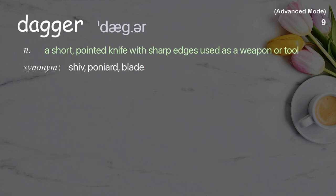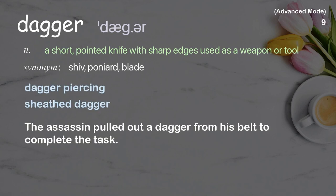Dagger: A short, pointed knife with sharp edges used as a weapon or tool. Examples: dagger piercing, sheath dagger. The assassin pulled out a dagger from his belt to complete the task.